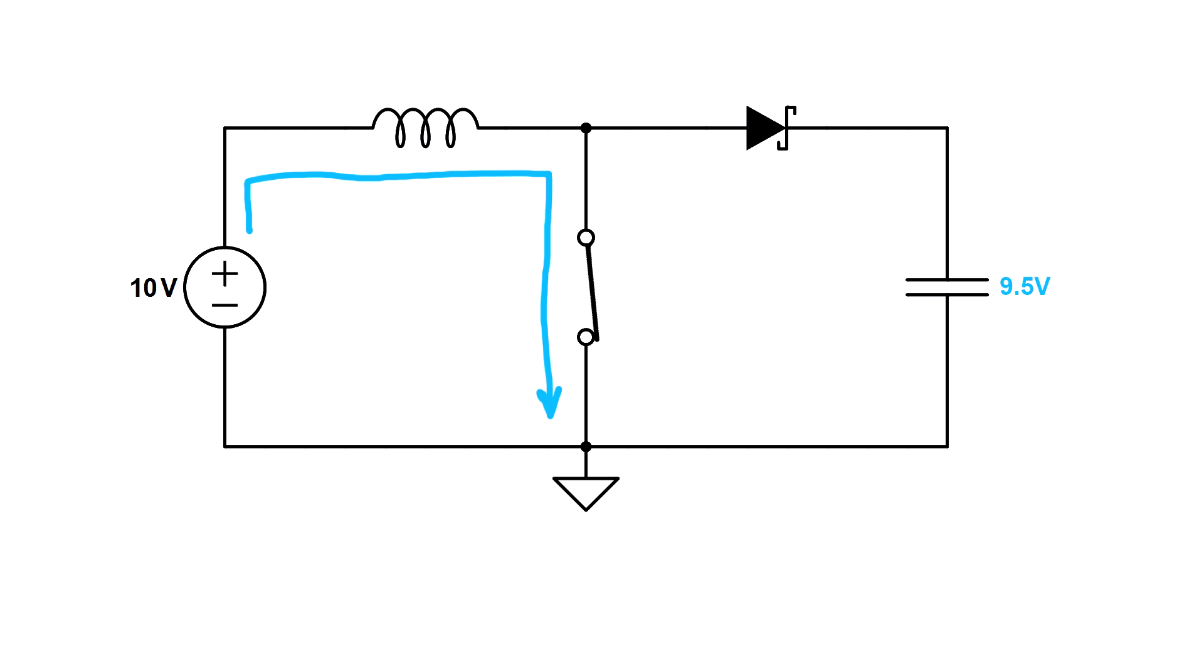We're only going to close the switch for a fraction of a second, just long enough for some current to start flowing through the inductor. When we do this, we're storing energy in the inductor in the form of a magnetic field. Now that we have some energy stored in the inductor, we're going to quickly open the switch. Since current in inductors can't instantly change, current has to flow through the inductor, through the diode and into the output capacitor. So energy gets transferred from the inductor to the output capacitor and the voltage increases. Our boost converter has now boosted the voltage.